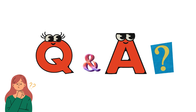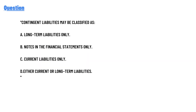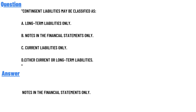Today's question is: contingent liabilities may be classified as — option A: long-term liabilities only; option B: notes in the financial statements only; option C: current liabilities only; option D: either current or long-term liabilities. The correct answer is option B — notes in the financial statements only.